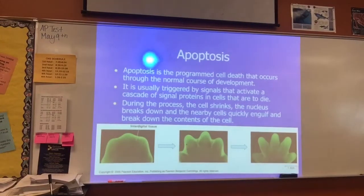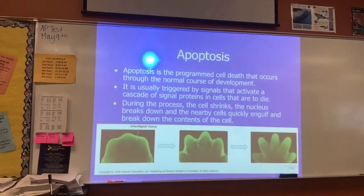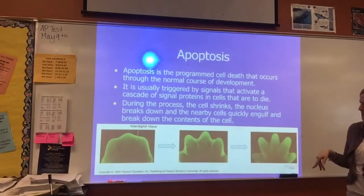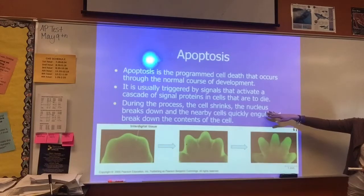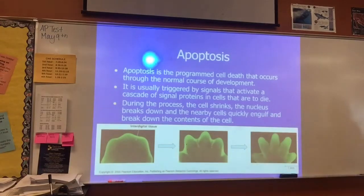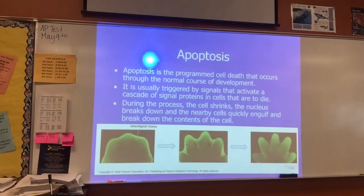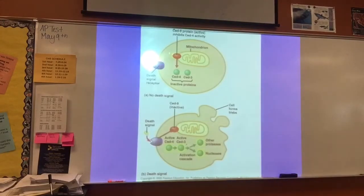As a review, since we're talking about development and how genes turn on and off: apoptosis is also an important part of development. Apoptosis is programmed cell death that occurs through the normal course of development — usually triggered by signals that activate a cascade of signal proteins, as we discussed in Chapter 11. During apoptosis, the cell shrinks, the nucleus breaks down, and nearby cells quickly engulf and break down the cell's contents. This is a normal part of development, like the tissue between fingers and toes — the same idea applies here, relating to morphogenesis and the shape of the organism.